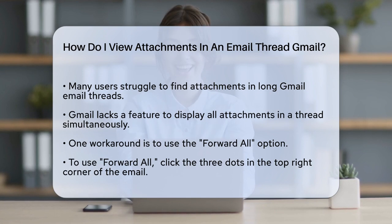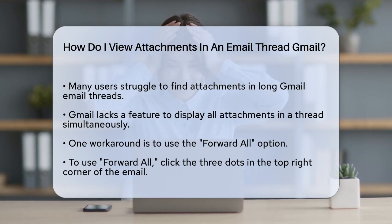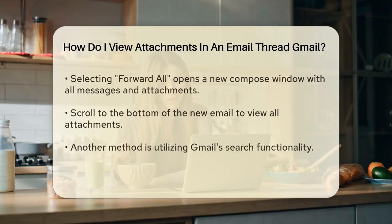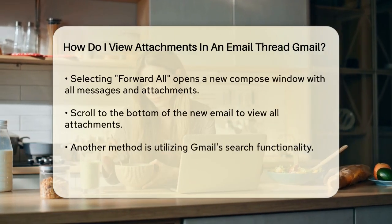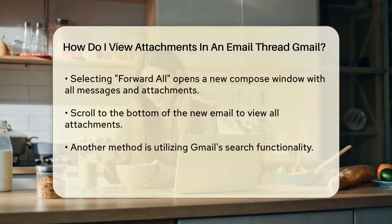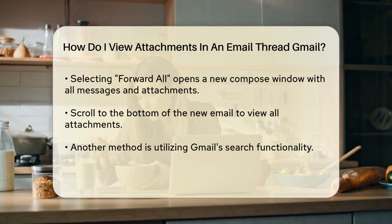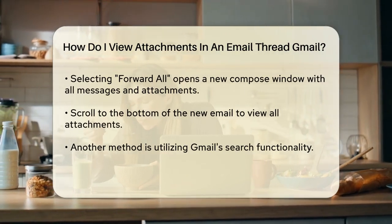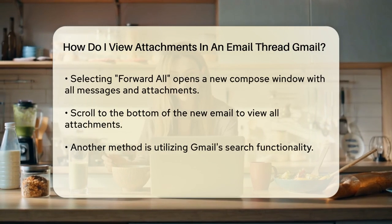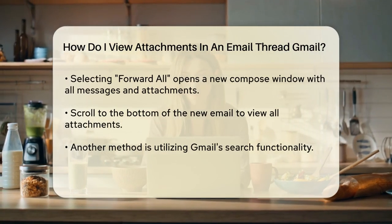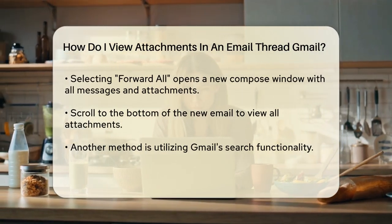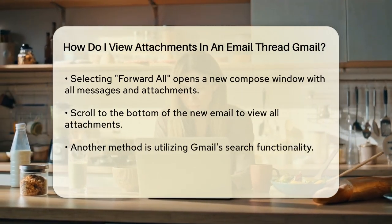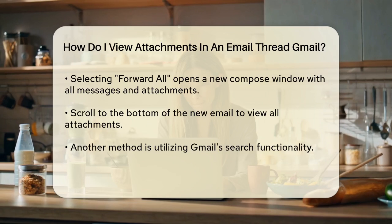One method involves using the Forward All option. When you're in the email thread, click on the three dots at the top right corner of the email and select Forward All. This will open a new Compose window with all the messages and their attachments included. Scroll down to the bottom of this new email and you'll see all the attachments listed. You can then download or open them from there.